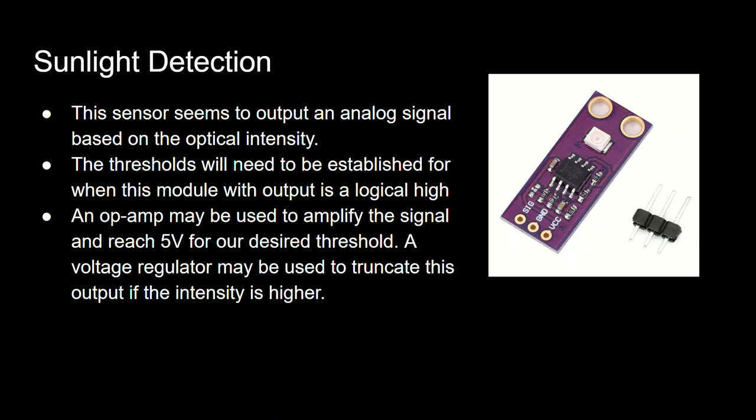Sunlight detection: this sensor outputs an analog signal based on optical intensity. The threshold will need to be established for when the module output is a logic high. An op-amp may be used to amplify the signal and reach 5V for our desired threshold. A voltage regulator may be used to truncate this output if the intensity is higher.